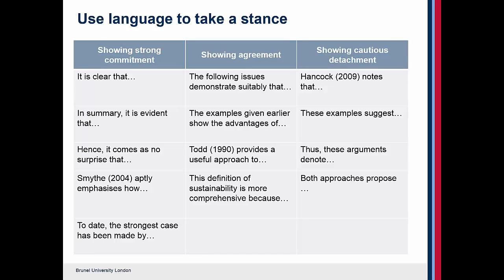These phrases inform your reader and marker that you are committing strongly in agreement to whatever these upcoming studies are saying. On the right-hand side column are phrases to show cautious detachment — for example: 'these examples suggest', 'or denote', or 'both approaches propose'.